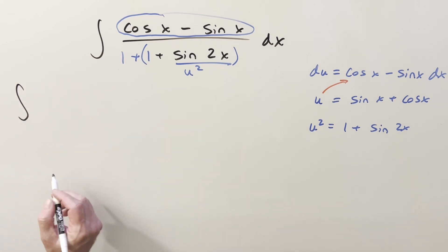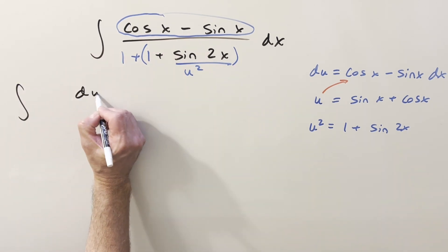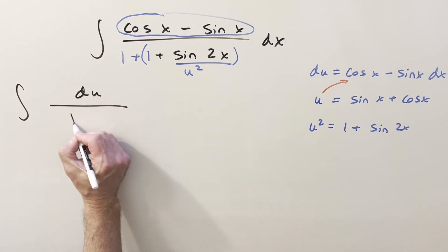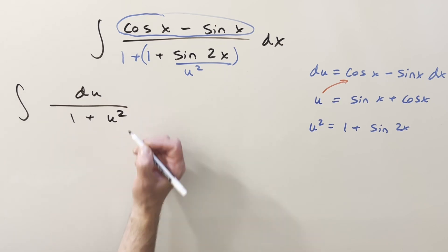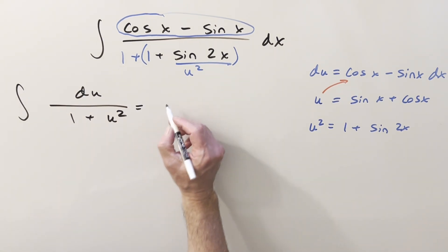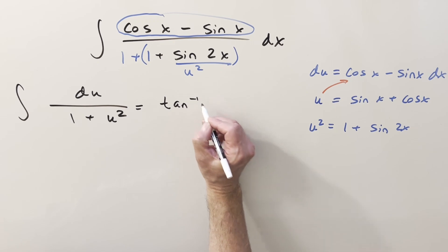And then going ahead with this substitution, what's going to happen, the whole numerator is going to be du. And what we're left with here is just 1 plus u squared. But this is just our arctan integral. So we integrate this and we just get arctan of u.